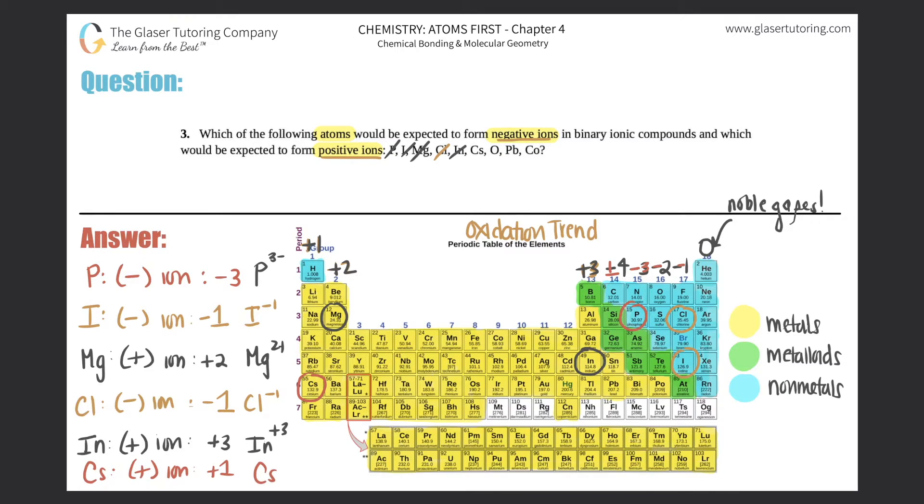Oxygen is in the negative two category. It would want to gain two electrons, so this would form a negative ion, more specifically negative two. You can write these as negative two, I just have a habit of writing the number first and then the negative, it doesn't really matter though.